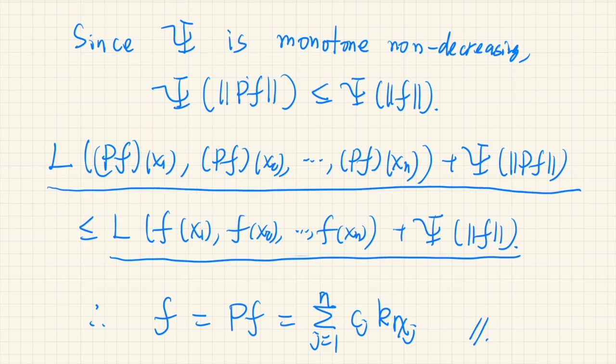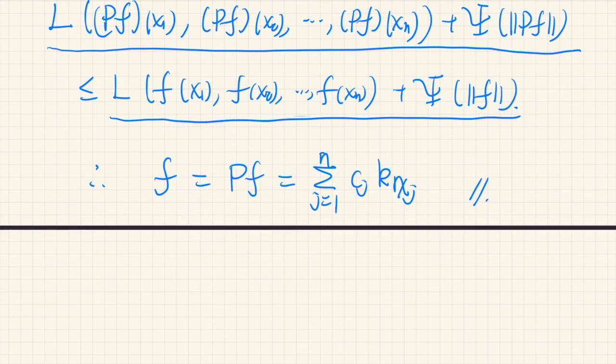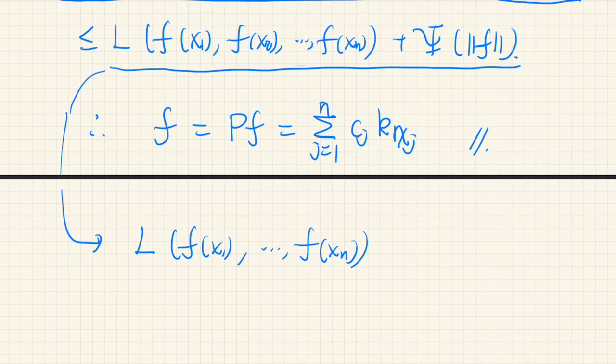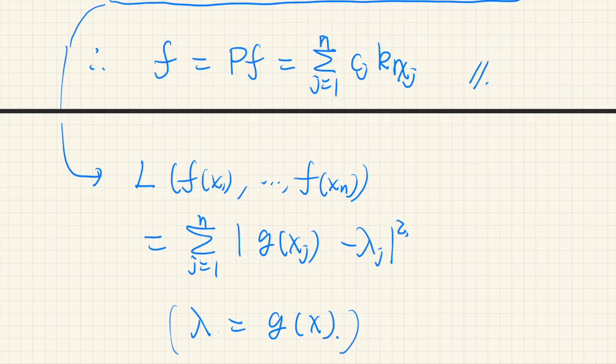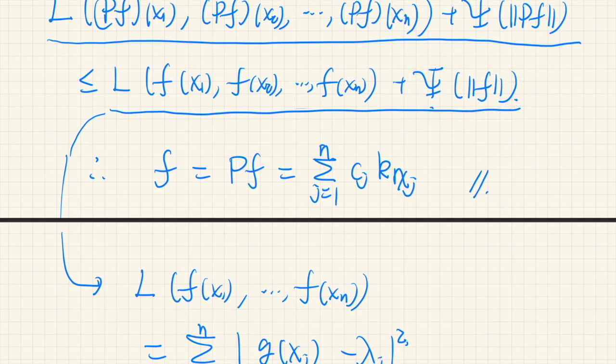So, this theorem gives a justification for applying the kernel method to regression problems in general. In the case of regression problems, this function L is the error function. So, L(f(x1) and so on, f(xn)) may be of this form: sum over j from 1 to n, and some function g. So instead of f, let's write it as g, g(xj) - λj squared. So it's an error function. We are trying to model the value of lambda by function g of x.